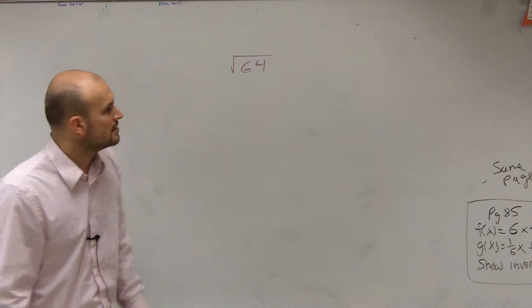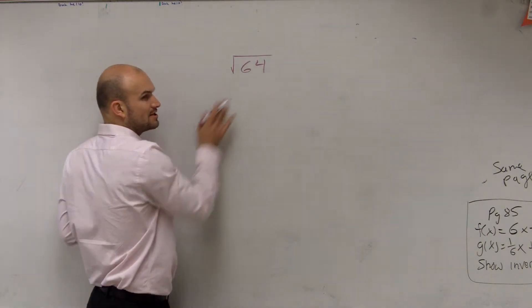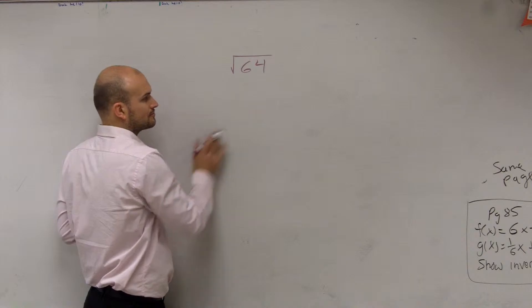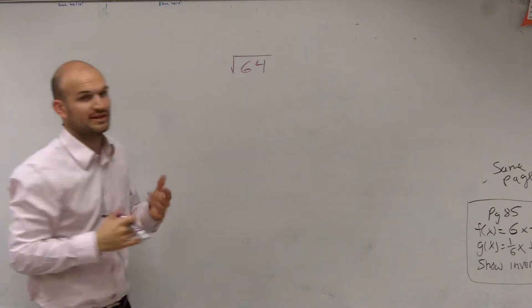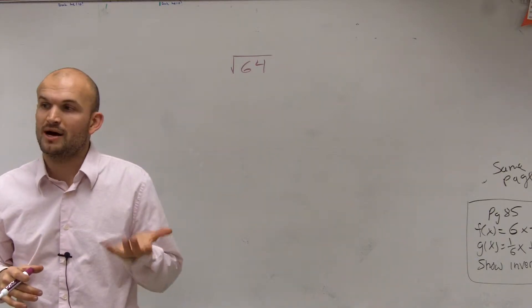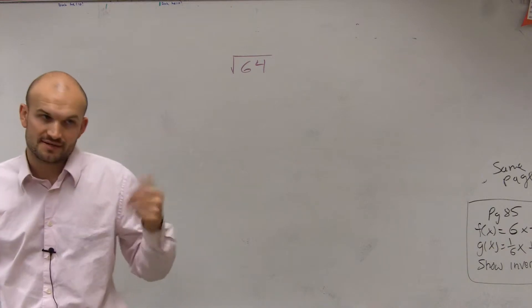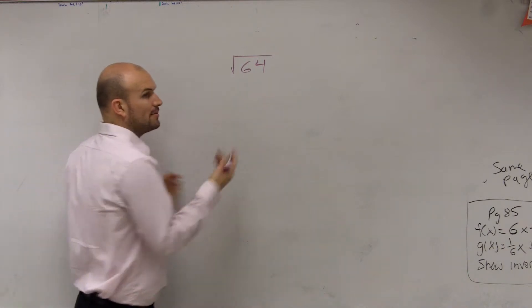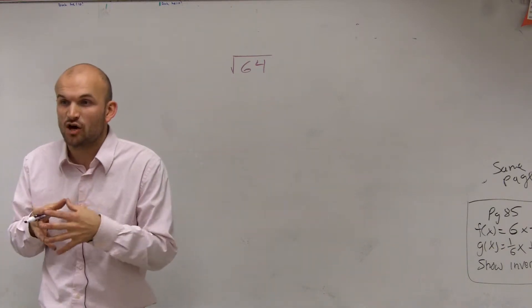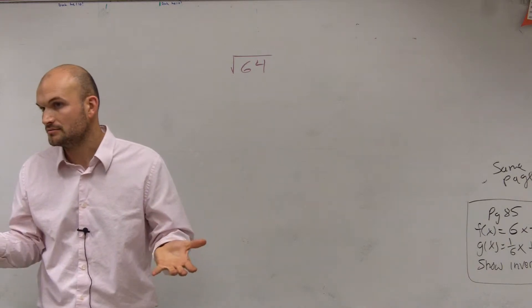Let me go through a couple things. The square root of 64 states: what number multiplied by itself twice gives us 64? When I multiply a number by itself, that's squaring it, right?